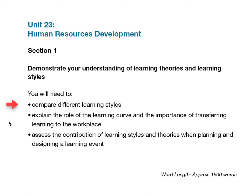For bullet point 2 you will need to describe what is meant by the learning curve — that is getting better through repeating the activity — continuous learning and development, and discuss how training and learning can be transformed into performance in the workplace. For bullet point 3 you will need to describe a training or learning event scenario such as a workshop on quality control techniques and explain how a knowledge of different learning styles and learning theories might influence the format of the workshop.